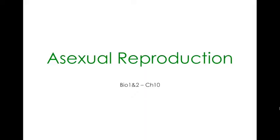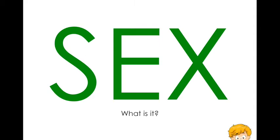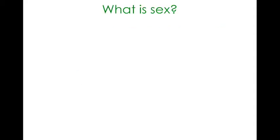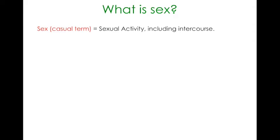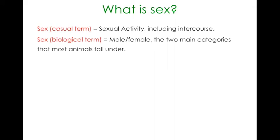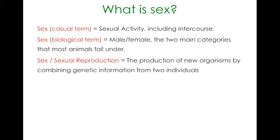So, asexual reproduction. Before we actually look at what asexual reproduction is, we need to define the word sex. Now the casual term for it is obviously referring to sexual activity or intercourse. There is a biological term referring to biological sex — male and female, the two main categories that most mammals and animals fall under. And then there is also sex in terms of reproduction or sexual reproduction, being the production of new organisms by combining genetic information from two individuals.